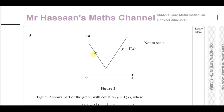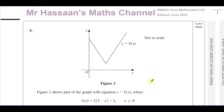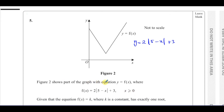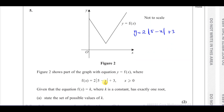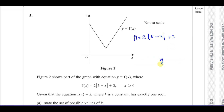So this is a question about the modulus function. It gives a graph and says figure two shows part of the graph with equation y equals f of x, where f(x) equals 2 times the modulus of (5 minus x) plus 3. This is the equation of this graph — it's a modulus function where x is greater than or equal to zero. The question says: given that the equation f(x) equals k, where k is a constant, has exactly one root, state the set of possible values of k.